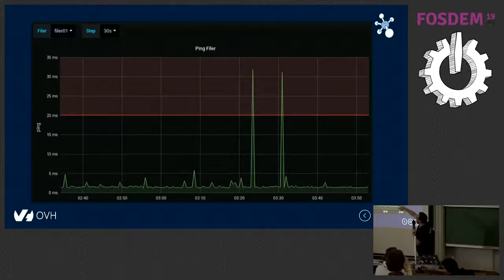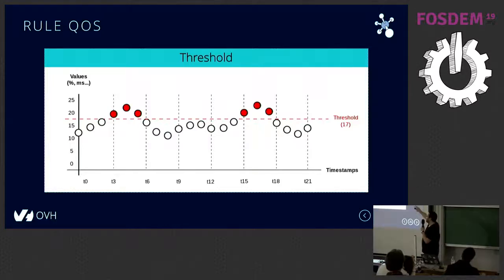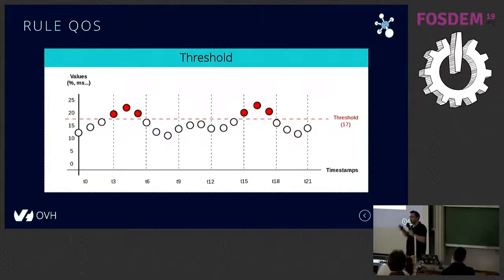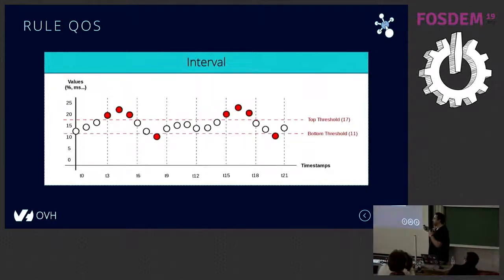Here is a server named filer01, showing the response time for ping. We can see there are two problem periods. We are computing the QoS every day, so there can be lots of data points in one day. For six data points, the response time is above a certain threshold, so the QoS must decrease during that time. We can also analyze a bottom threshold using the same method.